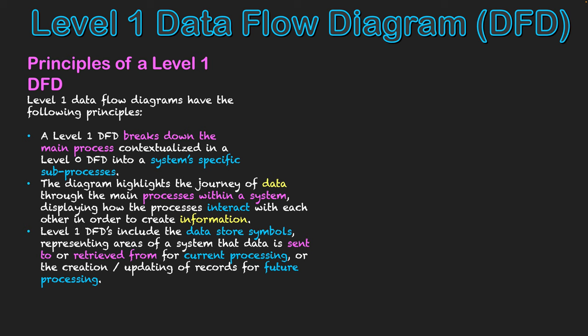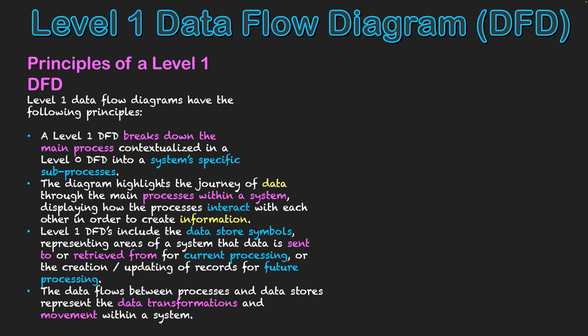Thirdly, level one DFDs have data store symbols showing where data is sent to and retrieved from — either for current processing or for saving data for future use so it can be referred to at a later date. Finally, data flows between processes and data stores represent the transformations and movement of data within the system. Remember: data must travel between external entities through processes — the only symbol that can connect to the same symbol type is the process circles.